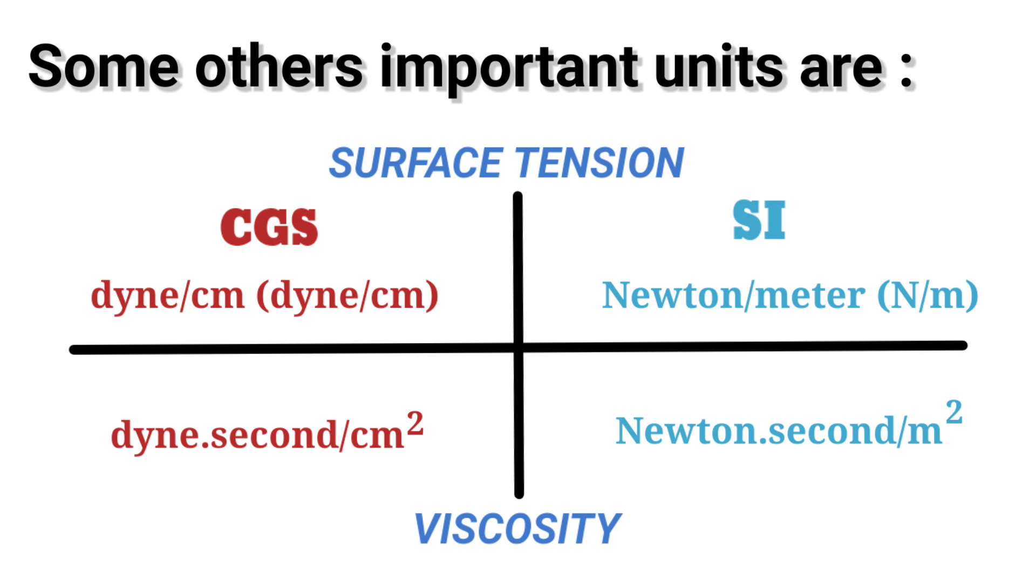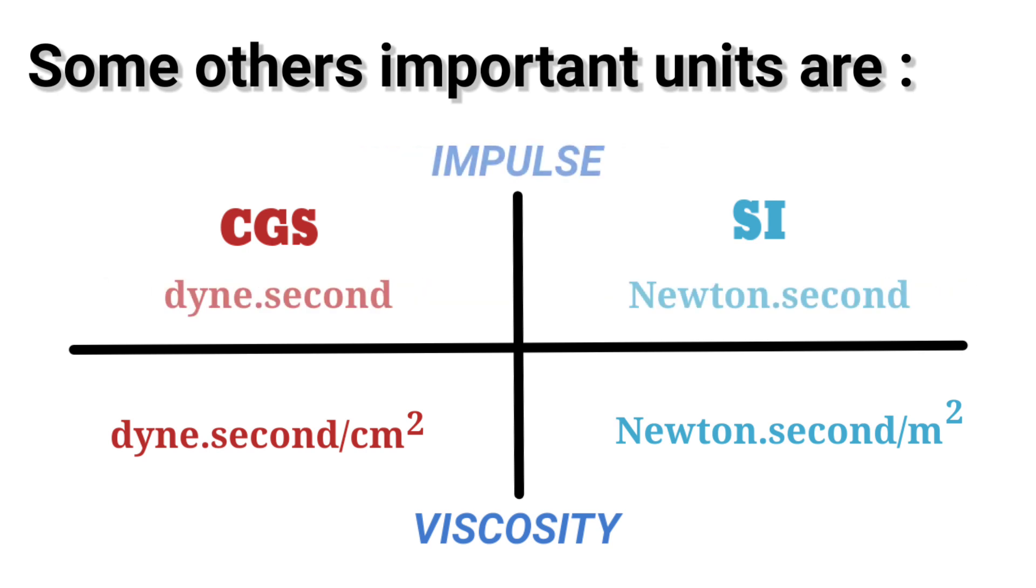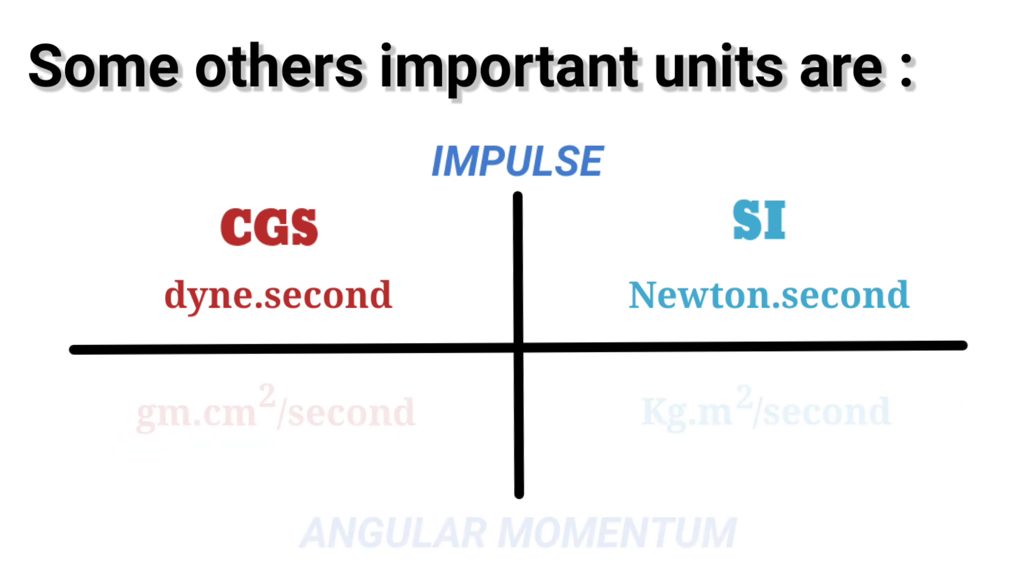Viscosity: dyne second per centimeter square, Newton second per meter square. Impulse: CGS dyne into second, SI Newton into second. Angular momentum: gram centimeter square per second, kg meter square per second.